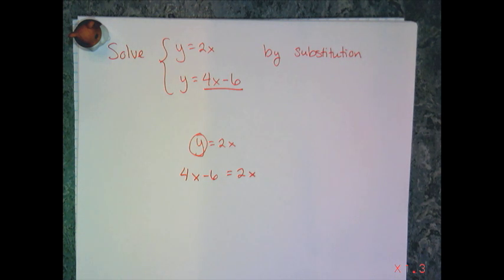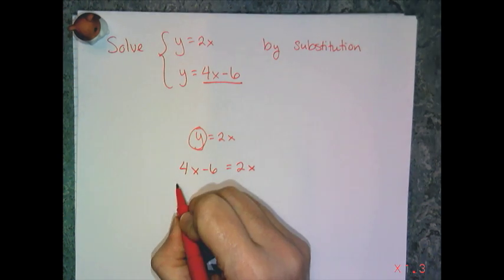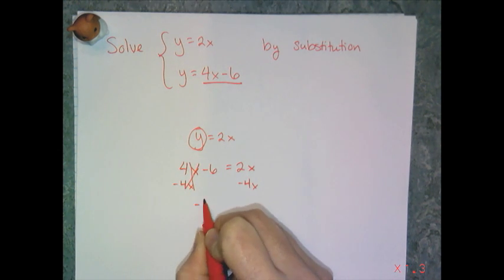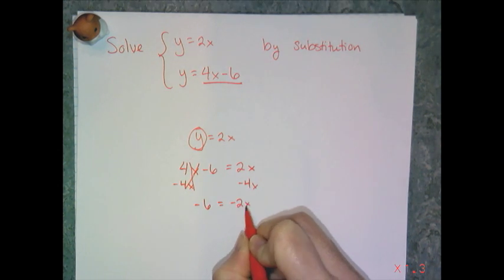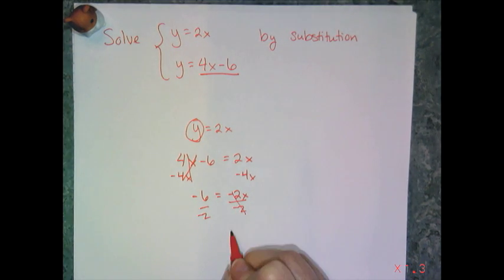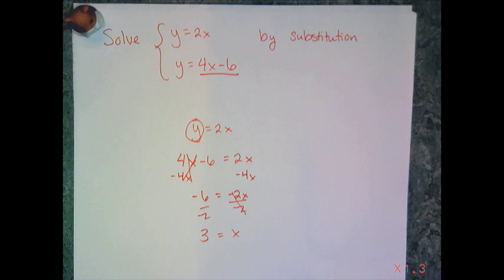This is just a plain old variables on both sides equation which you solved in the second six weeks. So I'm going to choose to subtract off 4x from both sides. So I get negative 6 equals negative 2x, and then divide both sides by negative 2 and I get x equals 3. And so I have the value of x.